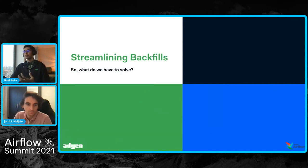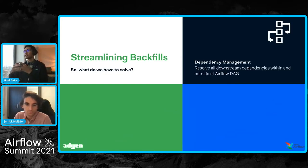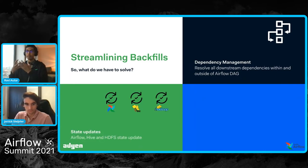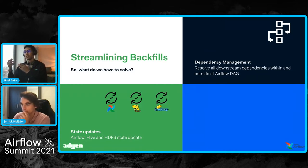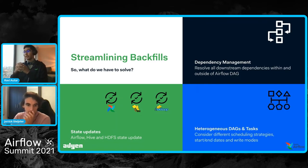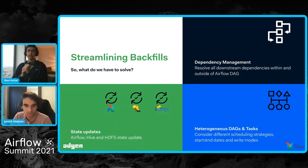It's clear that we need to streamline these backfills. More concretely, we need: first, solid dependency management — resolving downstream dependencies inside the DAG and also external dependencies in other DAGs. Second, reliable state updates — clearing the Airflow task instances, the Hive metastore partitions, and the data from HDFS since we have externally managed Hive tables. And finally, we need to consider the heterogeneous nature of our DAGs and tasks — different scheduling strategies, different start and end dates, and tasks with different write modes.